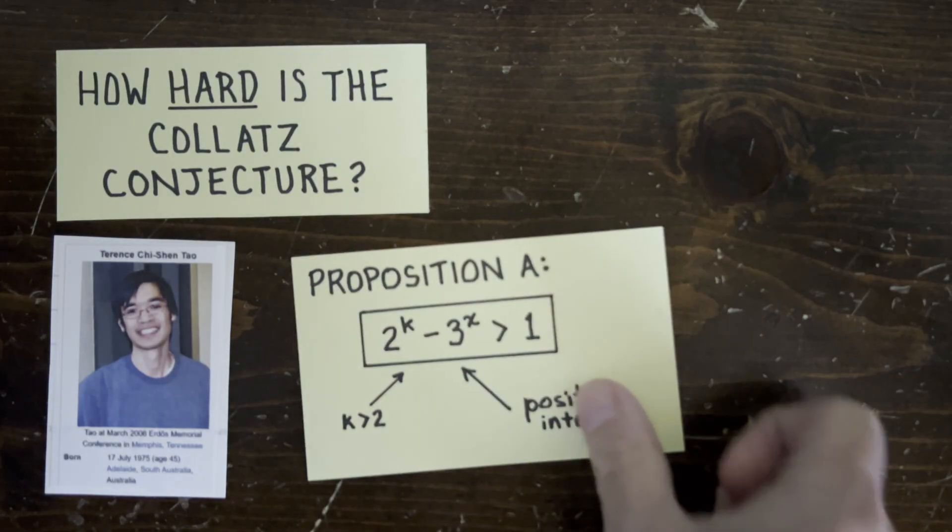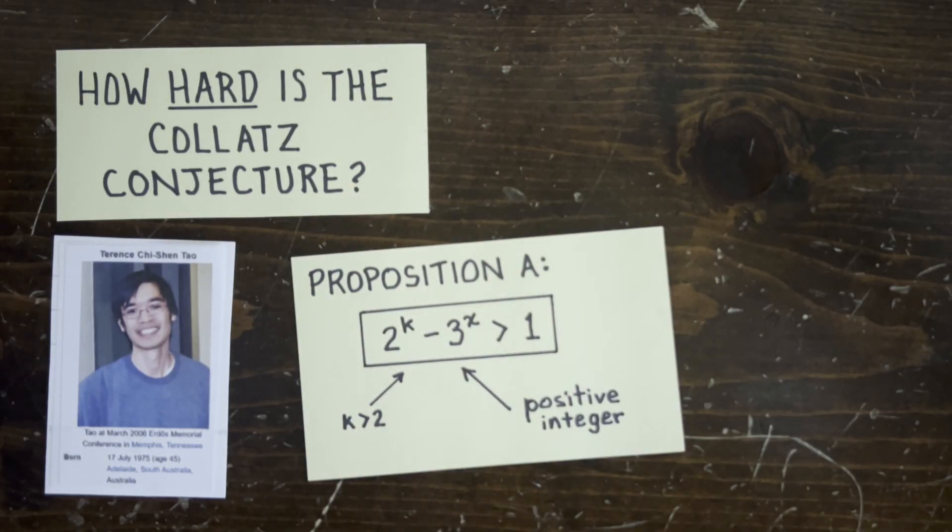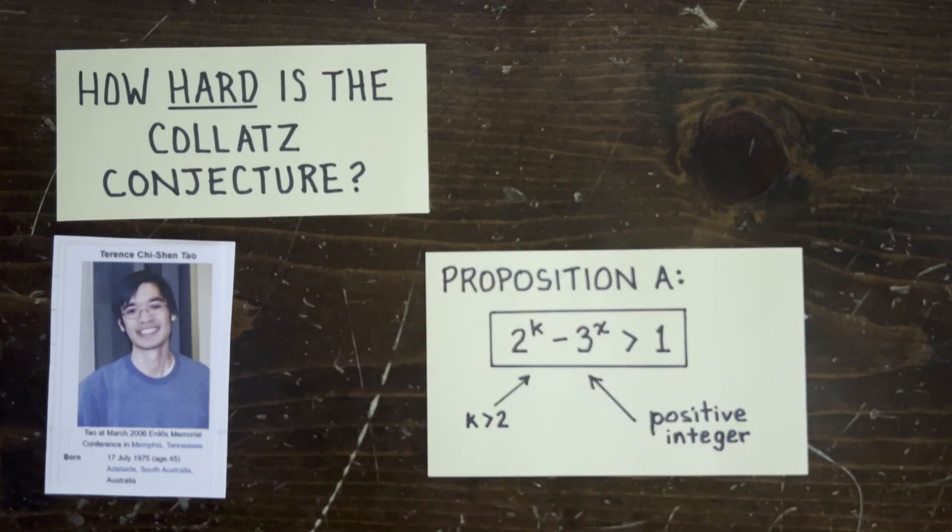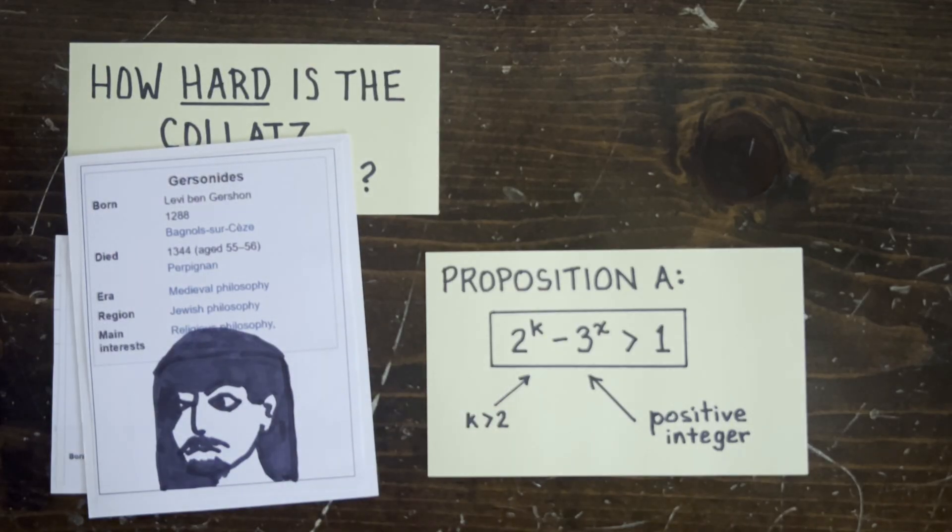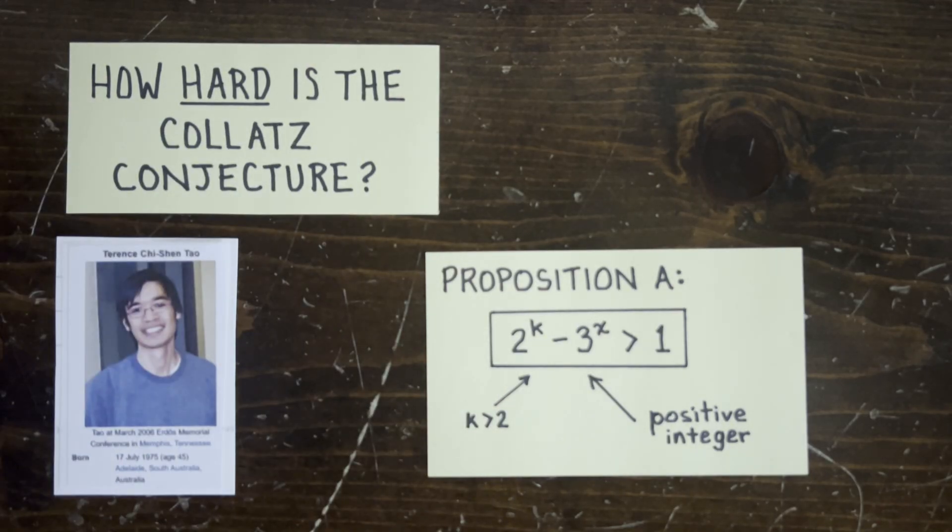Consider Proposition A. For any powers of 2 and 3, their difference has to be bigger than 1. Well, k and x are integers here, and we're just going to consider the cases where the left-hand side is positive. It's actually easy to prove the difference can't be 1. Gersonides did it in the year 1343, and we covered that earlier in this channel.